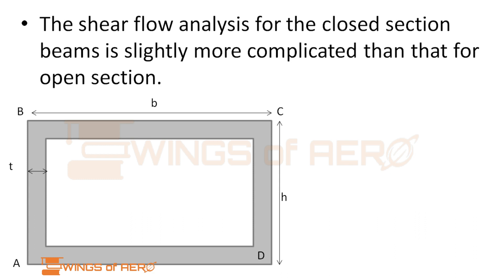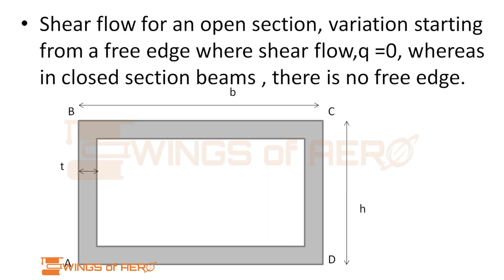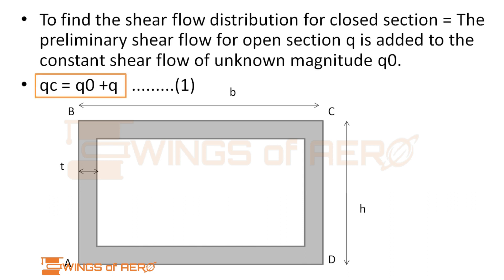Here, in this derivation, our main goal is to determine the shear flow for this closed section. To find the shear flow for an open section, we start from a free edge where the shear flow q equals 0. But in closed section beams there is no free edge, so such a problem becomes an indeterminate structure. Here, how to find the shear flow distribution for a closed section?